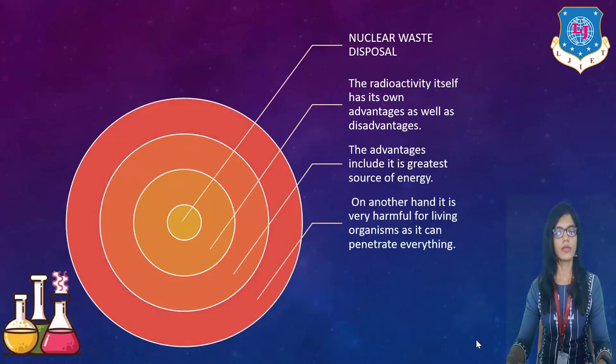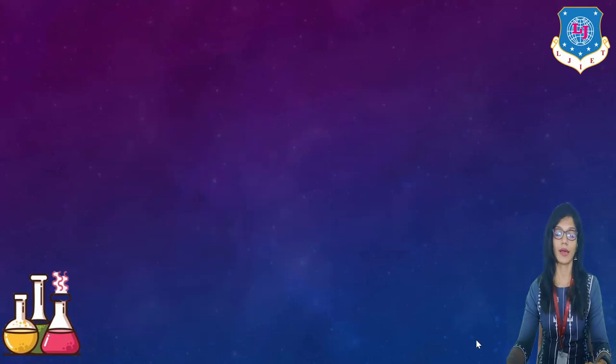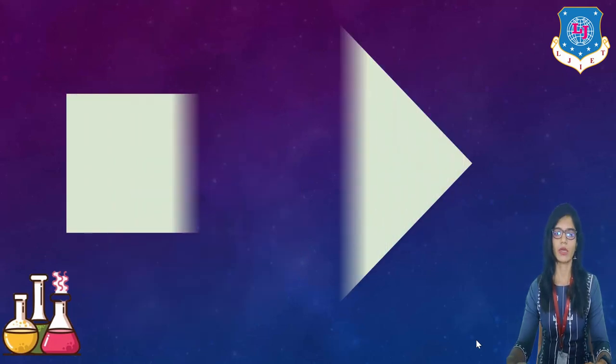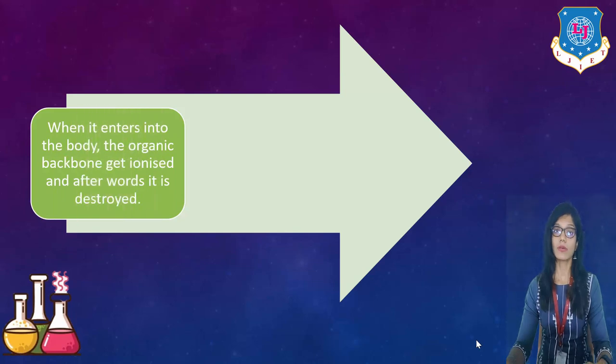On other hand it is very harmful for living organisms as it can penetrate everything. It can penetrate everything which is present on the earth. There is nothing which can't be penetrated using radiations, using alpha, beta and gamma radiations. So when it enters into the body the organic backbone get ionized and afterwards it is destroyed.